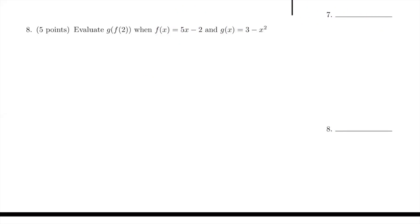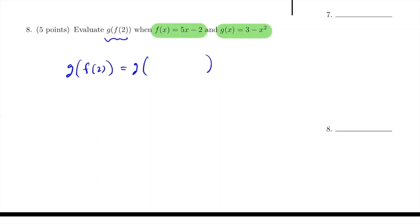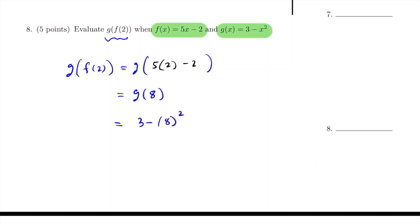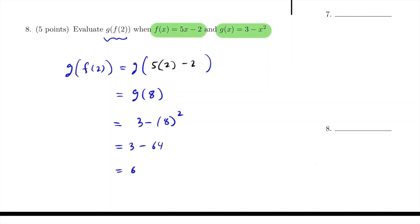For number 8, we find g(f(2)) where f(x) = 5x − 2 and g(x) = 3x − x². We evaluate f first: f(2) = 5(2) − 2 = 10 − 2 = 8. So g(f(2)) becomes g(8). Now plug 8 into g: g(8) = 3(8) − 8² = 24 — wait, that's 3 minus 64. So this gives 3 − 64 = negative 61. That's the value for g(f(2)).